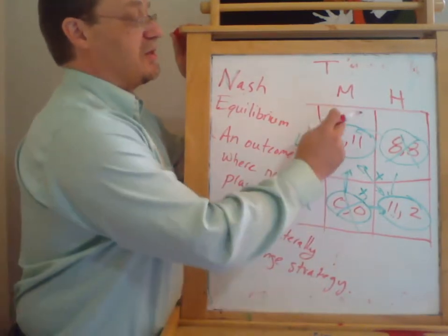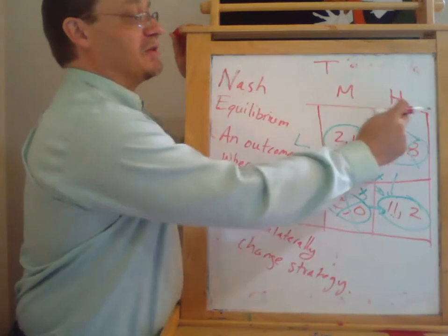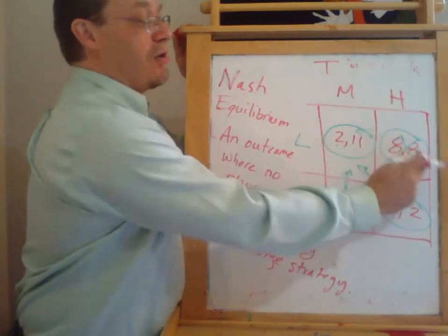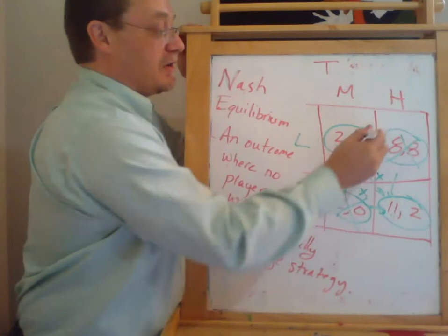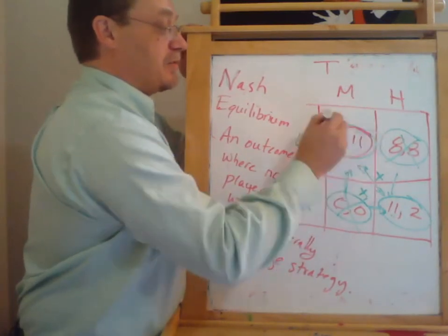If we start in this square, will Target want to switch to high? No, because that would give it eight rather than eleven. So this is a Nash Equilibrium.